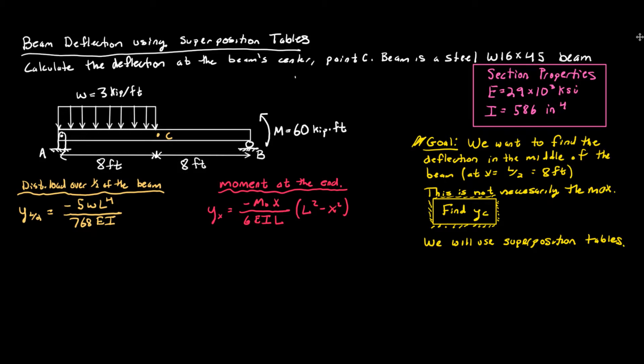So in the back of your book there should be an appendix — it's basically a list of a bunch of different equations for different types of loading. So there might be an equation for distributed load over the whole beam, load over half of the beam, concentrated loads at the end, the middle, or different points, moments — there's everything. I advise you to look at those and kind of explore them a little bit.